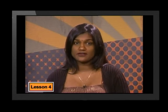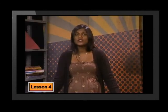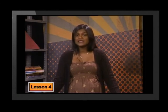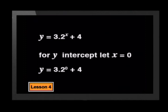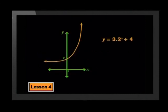Now we can return to what we noticed about the a-value affecting the y-intercept. If we consider a graph such as y equals 3 times 2 to the power of x plus 4, we can predict the y-intercept by substituting x equals 0: y equals 3 times 2 to the 0 plus 4, which gives 7. So the y-intercept can be found by adding the a-value and the q-value. The graph of this function does indeed have a y-intercept of 7. You need to check more examples of this for yourself.